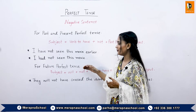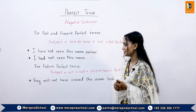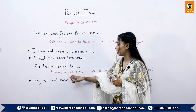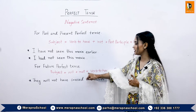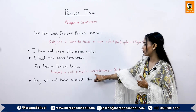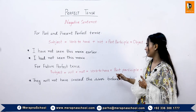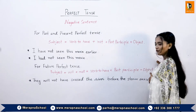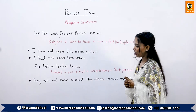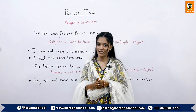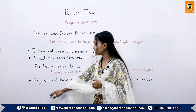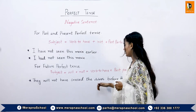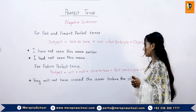For the future perfect tense, the structure is: subject, plus will, plus not, then verb to have, then the past participle form of the verb, and then the object or the rest of the sentence. For example: They will not have crossed the river before the storm arrives.